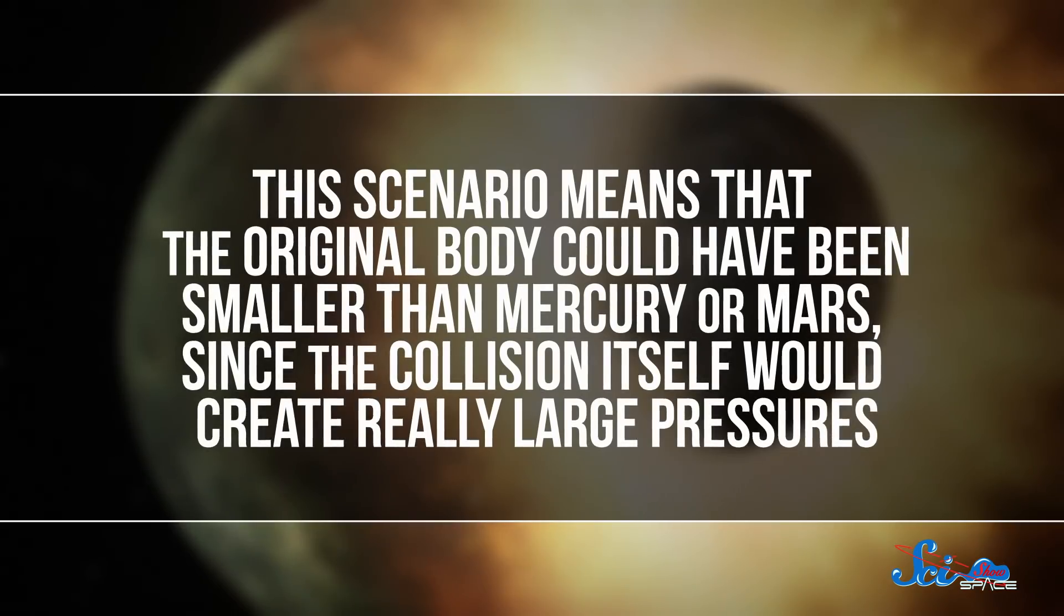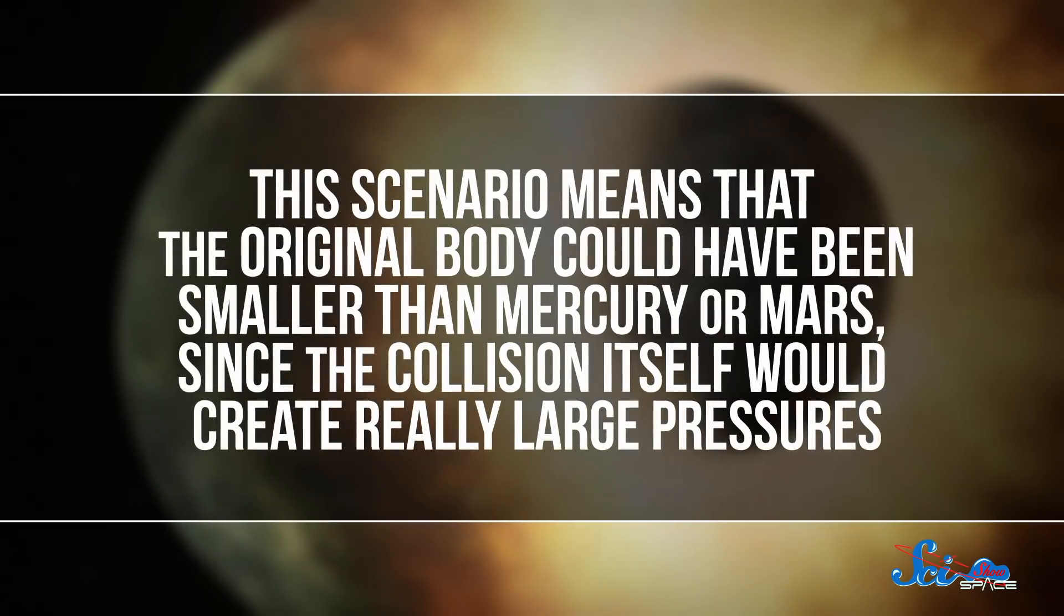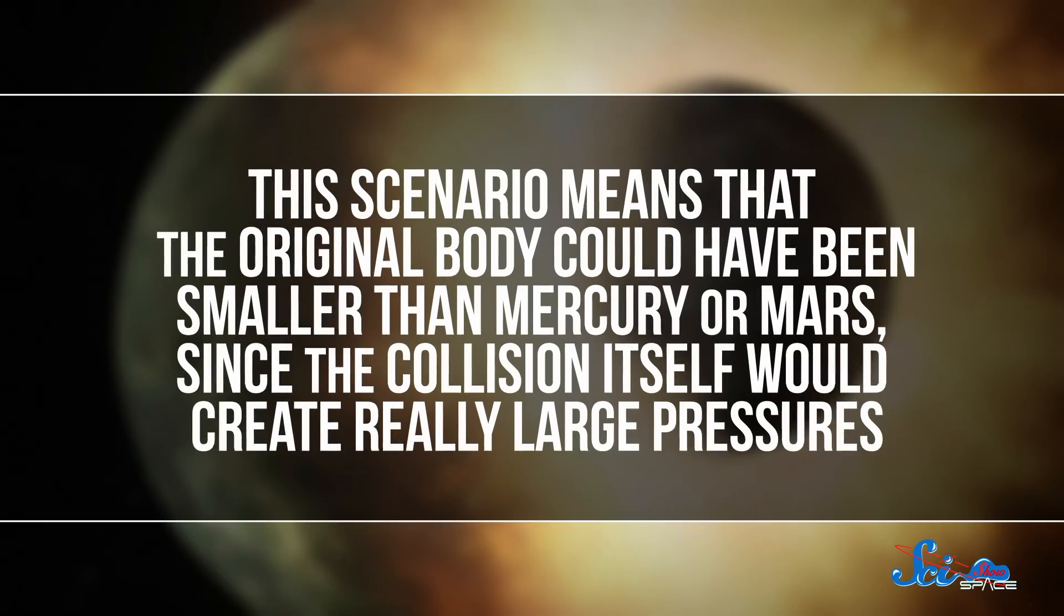This scenario means that the original body could have been smaller than Mercury or Mars, since the collision itself would create really large pressures. And that's an important clue in understanding what sorts of objects were floating around in the early solar system.